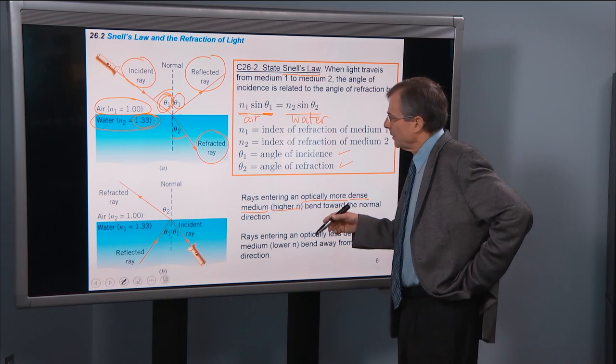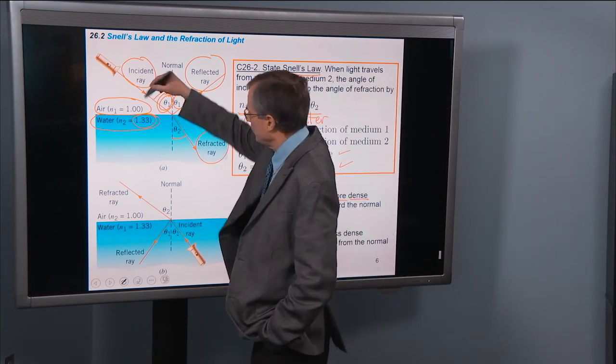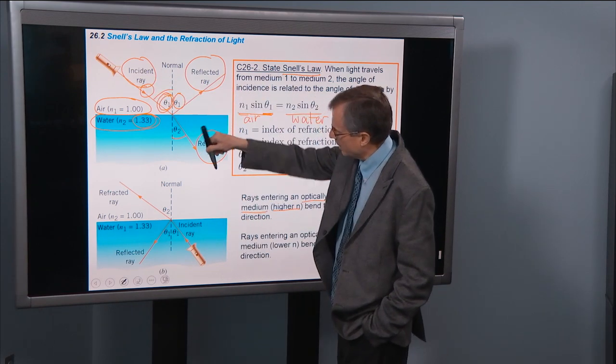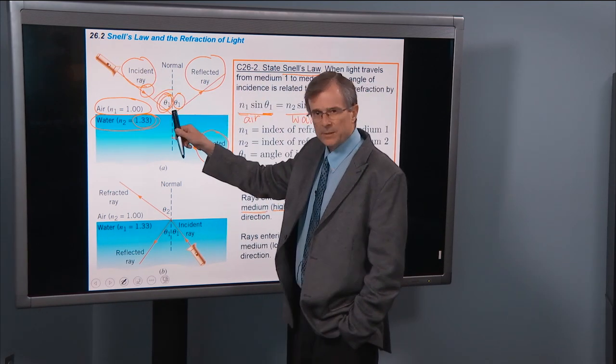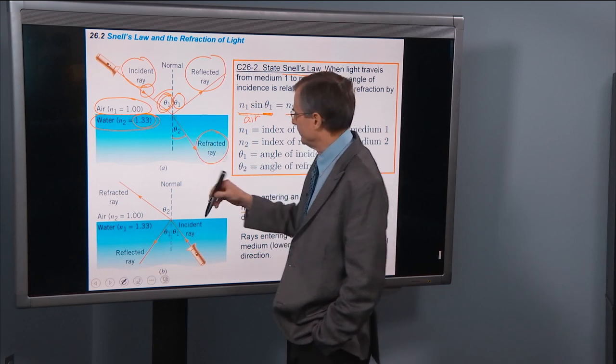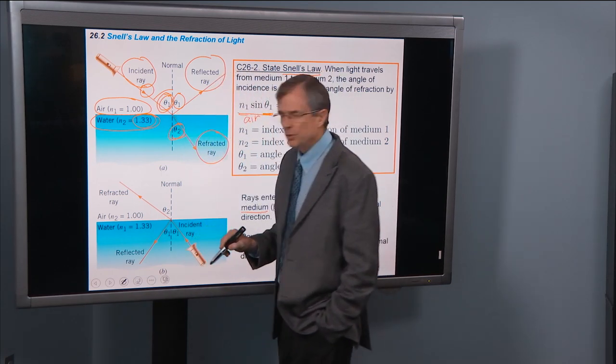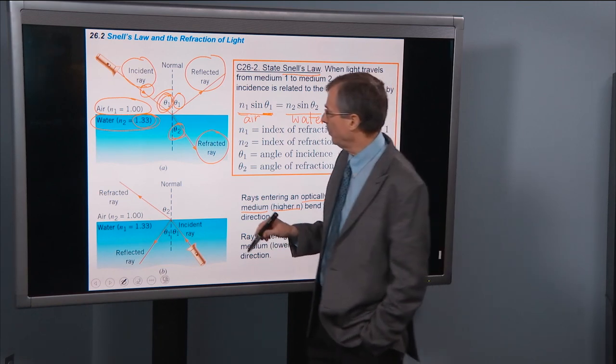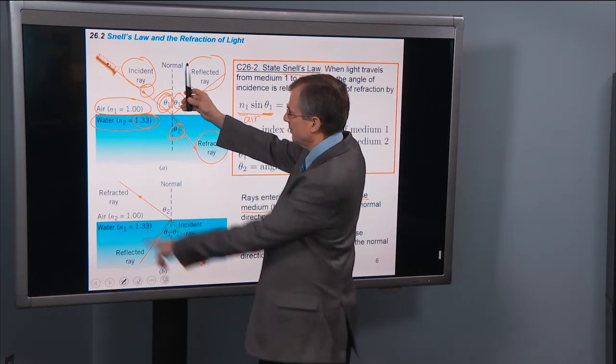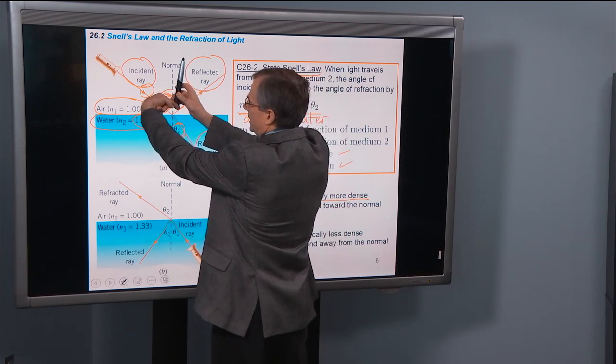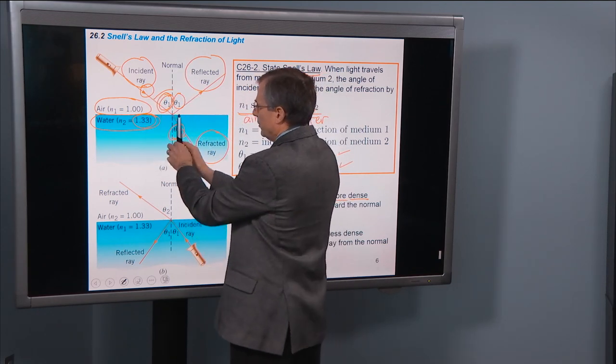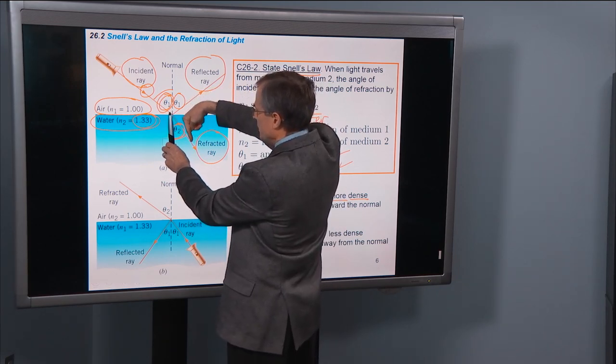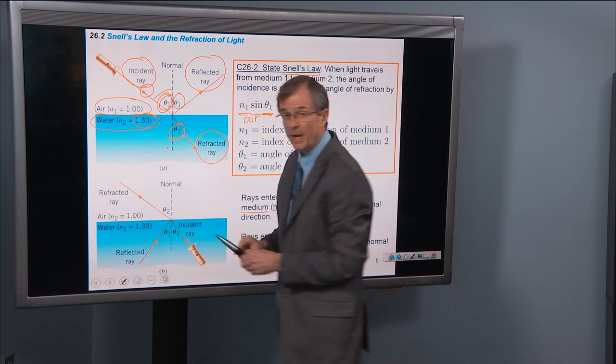Those rays, when they enter an optically more dense material, as this ray is going from air into water, then the ray will bend toward the normal direction. In other words, this angle θ2 will be smaller than angle θ1. Here's the normal direction of the incident ray. The incident ray is coming in like that, and here's the normal direction, also the same direction. But that refracted ray has bent in the direction of the normal.